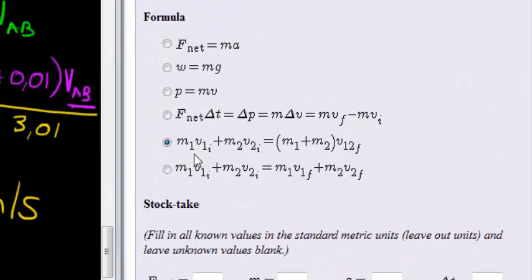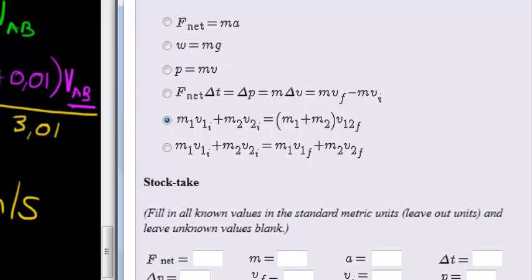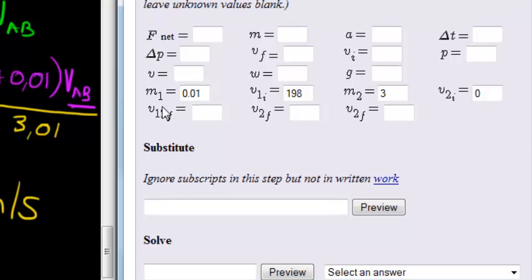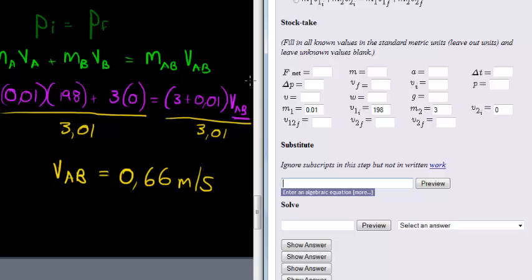Okay, so hopefully you agree with me that this is the formula that we end up using. It's where we have the mass of two systems, or two units actually, equal to the mass of one unit, where we have a single velocity in the end. Doing our stock taking process, we know the mass of our first object is 0.01, the velocity of that first object is 198, the mass of the second object is 3 kilograms and its initial velocity was 0, and then what we want is the velocity of the unit after it got stuck, the future velocity of that.